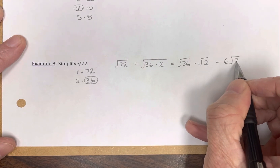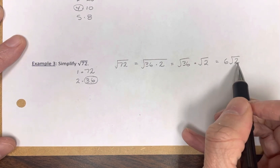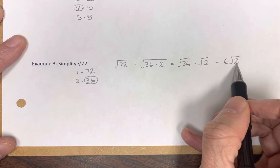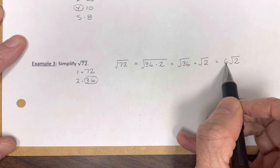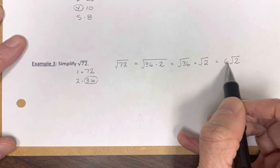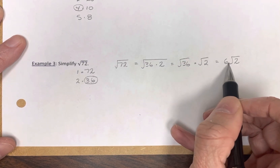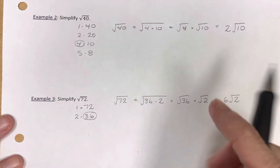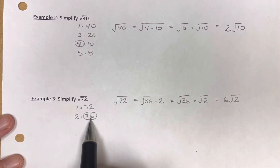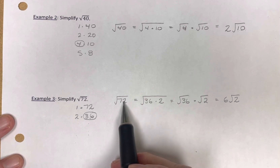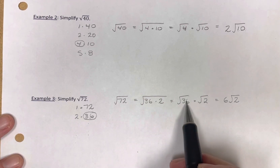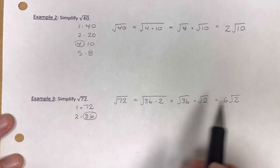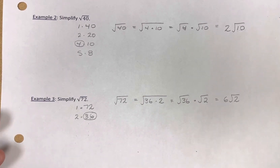The square root of 36 is 6, and we're left with the square root of 2. The number inside the square root is as small as possible while still being a natural number — we removed the largest perfect square factor, which was 36, giving us 6 times the square root of 2. That is how you simplify square roots: note the possible factors, choose the largest perfect square factor, rewrite the number as a product, apply the square root rule, and you'll have a simplified square root.